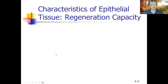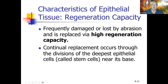Epithelial tissue has the ability to regenerate quickly. A small cut in your mouth heals fast. Compare how quickly skin heals to a bone or cartilage — much, much faster. This tissue is frequently damaged by abrasion and replaced by high regenerative capacity. Cell division happens quickly in epithelial tissue because it needs to be repaired quickly — it's what's really protecting you.